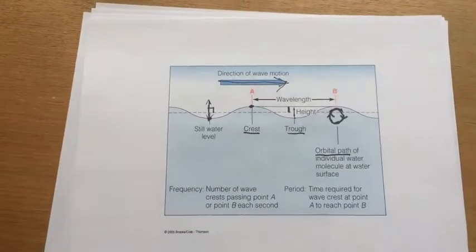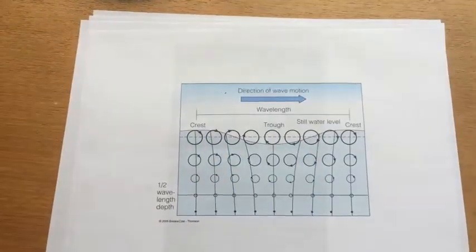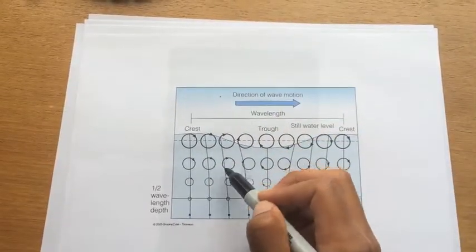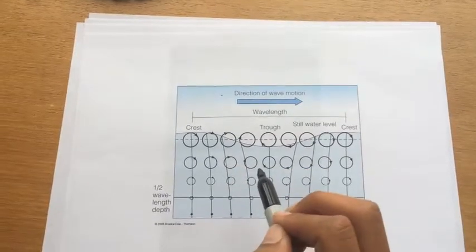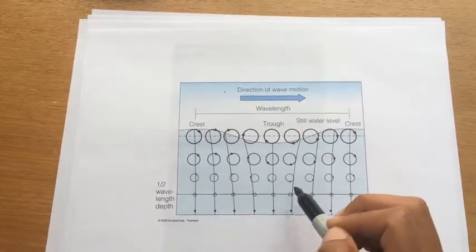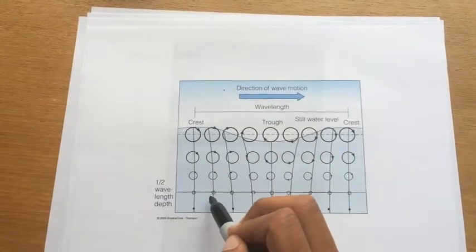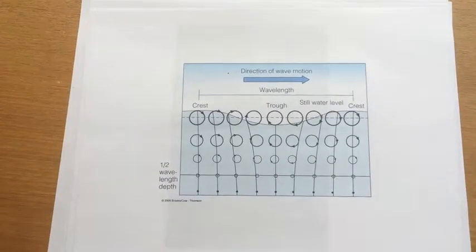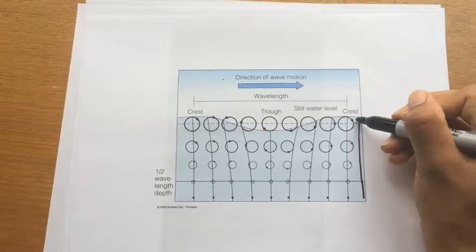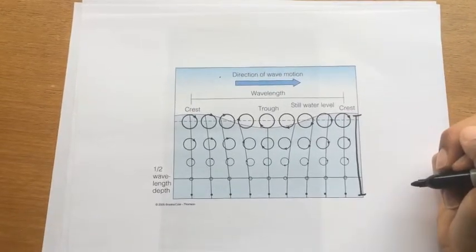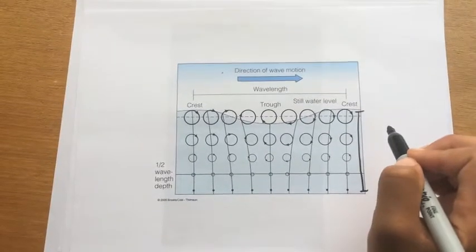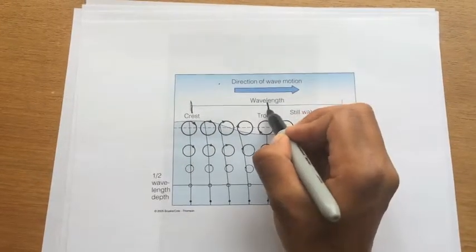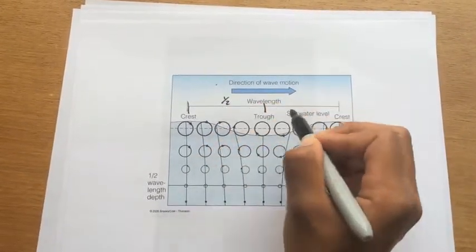In the ocean, these little orbital waves go all the way down. As the wave moves along, all these wave particles are moving in little circles, and as you go further and further down it has less of an effect — so the orbitals get smaller and smaller. In what is considered deep water, the depth is greater than half of the wavelength — in other words, the depth is greater than the distance from a crest to a trough, since that would be one half of a wavelength.